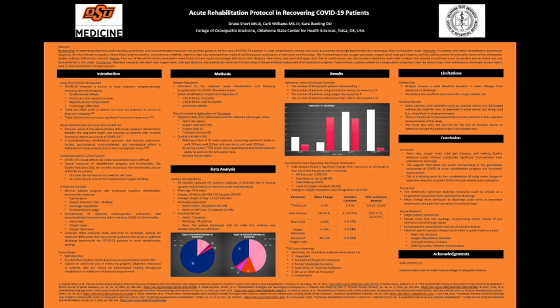Our study was a retrospective study looking at de-identified medical data from a specific patient population. These patients were admitted to the inpatient acute rehabilitation unit following hospitalization for COVID-19 related causes, with initial rehabilitation diagnoses of critical illness myopathy and critical illness polyneuropathy.